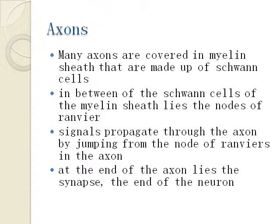A special thing about axons is that they are covered in a myelin sheath made up of a special type of cells called Schwann cells. In between the Schwann cells of the myelin sheath lies a node called the nodes of Ranvier. What is special about the Schwann cells and the nodes of Ranvier is that they shorten the duration in which the signal needs to travel across the axon from the cell body into the synapse.